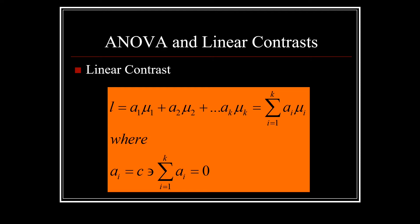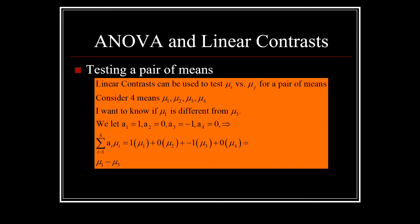Suppose we're testing a pair of means. Perhaps we have four means and we'd like to see if mu1 is different from mu3. We'll let a1 equal 1, a2 equal 0, a3 equal negative 1, and a4 equal 0 such that when we add these four a's up, we get zero. And so we sum from i equals 1 to 4 a_i mu_i and we get 1 times mu1 plus 0 times mu2 plus negative 1 times mu3 plus 0 times mu4 and that simply equals mu1 minus mu3.